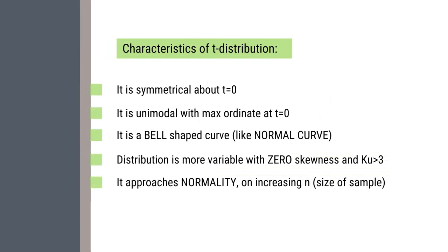Let us discuss the characteristics of the T distribution. It is a symmetrical distribution about T equals 0. It is unimodal with maximum frequency at T equals 0. It is a bell-shaped curve like the normal curve. The shape of the T distribution curve is comparable to the normal distribution curve depending upon the sample size — the greater the sample size, the closer is the match between the normal distribution curve and the T distribution curve. The distribution is more variable with zero skewness and kurtosis greater than 3. It approaches normality on increasing the sample size.